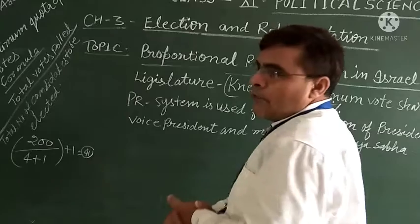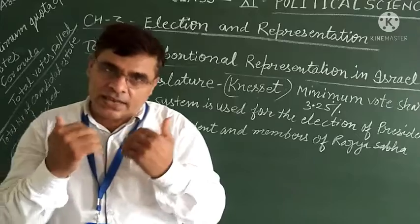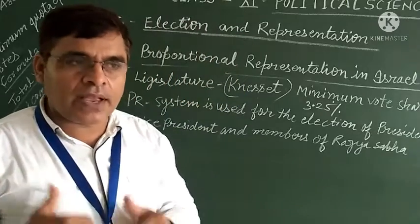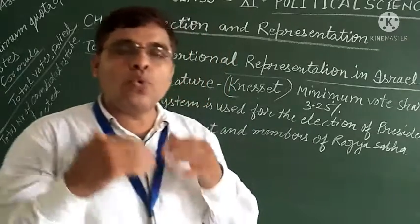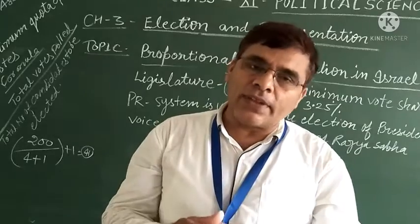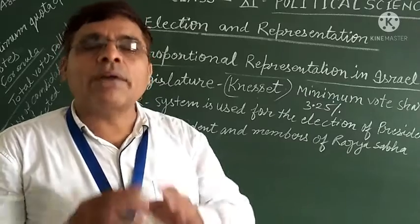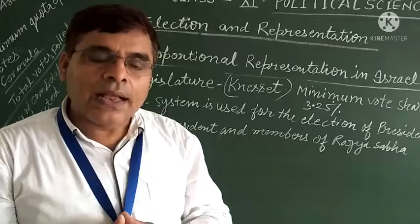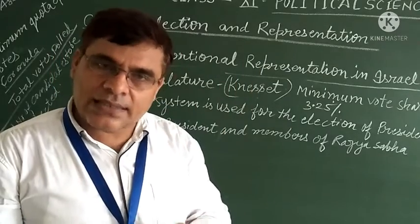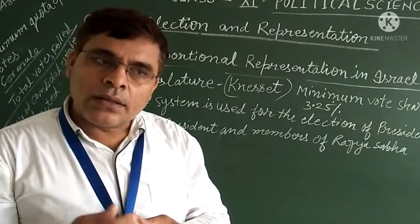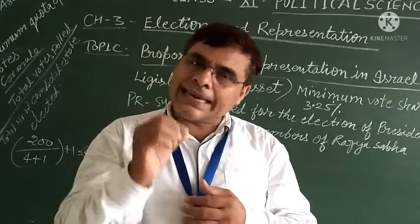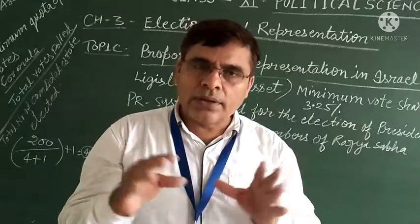Students, we discussed in the last video a system of election which is applied in our country, that is the First Past the Post system. According to this system, the candidates who stand in a particular constituency win the election and the citizens of the country vote for them. Our whole country is divided into several constituencies, and every constituency has candidates of each political party. They contest and get votes, and the candidate who gets the maximum votes is declared the victor.